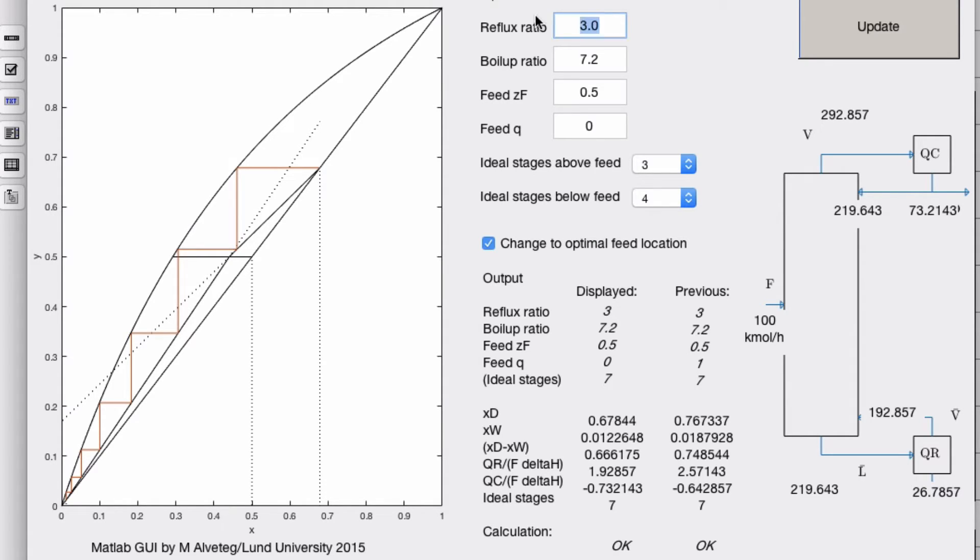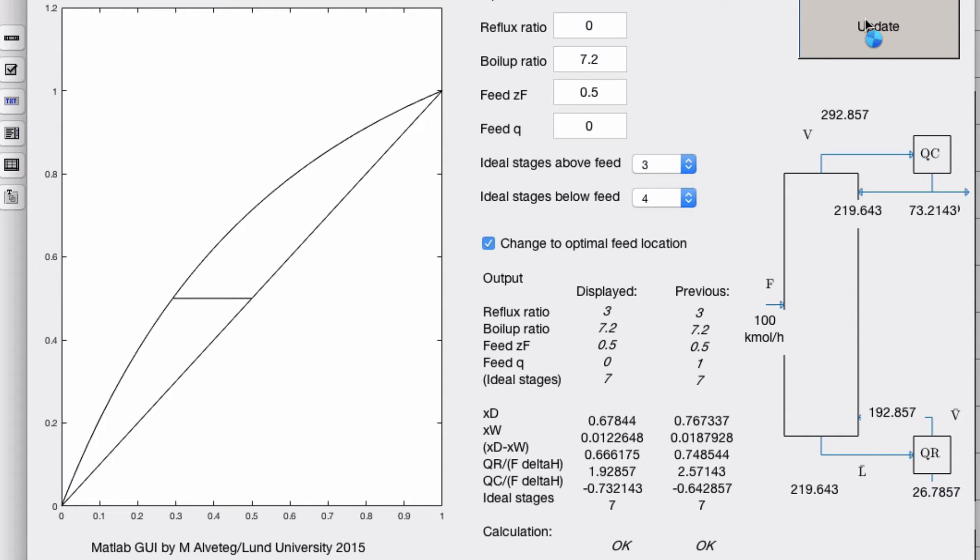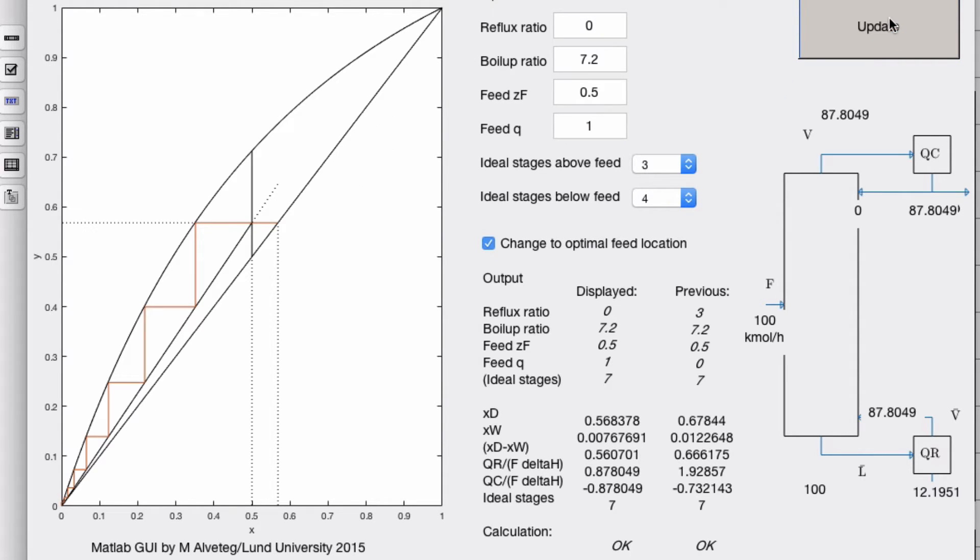How low reflux ratio can we have? Well, if we set to zero now, that doesn't work, right? No. But if you set q to one and reflux ratio to zero, it actually worked. Why is that? Well, this is a setup where you actually have the feed coming in as a liquid at the top. Now you don't need a condenser.